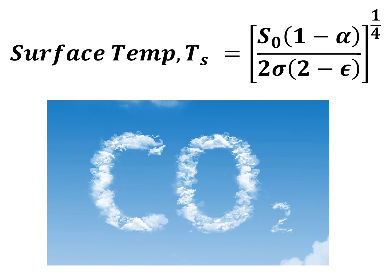What we're going to show is how weathering actually changes the CO2 content of the atmosphere. That will make the emissivity number bigger because the atmosphere will be more absorptive with more CO2 in it, which will make the denominator in this equation smaller — and if we make the bottom smaller, the whole thing gets bigger, so the temperature will go up.